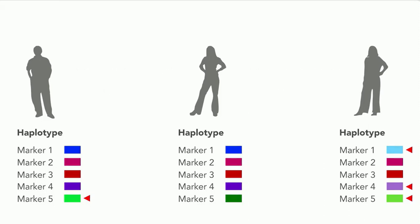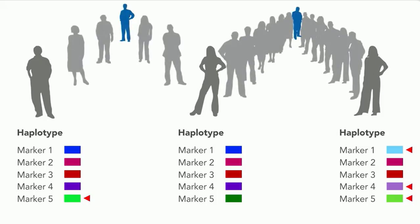Since scientists have been able to determine the average rate of mutation for each of the four types of DNA, the number of differences between your haplotype and that of another person can tell you approximately how many generations you have to go back in order to find a common ancestor.